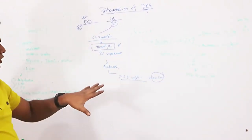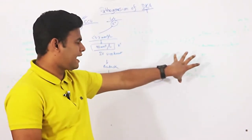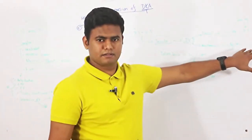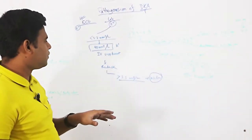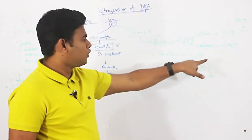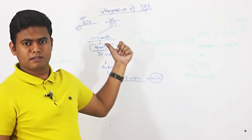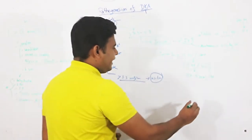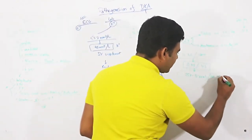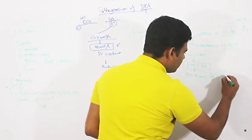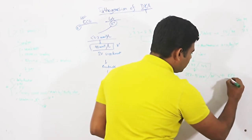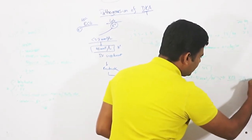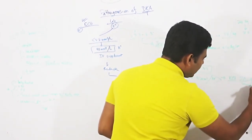If patients have a different saline, they have insulin. The important thing is that when we give insulin, we must monitor the patient's potassium level. This is why we add potassium to the saline — potassium chloride 40 mmol per liter.